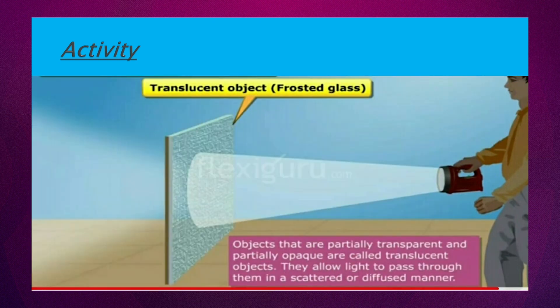Isi tarah se translucent object kya hoti hai - jo cheeze kuch light ko pass hone deti hai aur kuch ko woh rok deti hai, that things are known as translucent objects. Objects that are partially transparent aur partially opaque are called translucent. Jaise ke aapke copy pe chadhate hai aap cover thick wala plastic jo hota hai, jis mein se aapko picture poori clear nahi nazar aati. Is tarah ki cheeze jo hai unko hum translucent bolte hain.